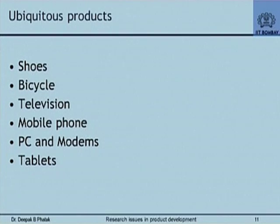Let me now talk about products that you and I are familiar with — ubiquitous products. Look at the list I have here: shoes. How many of you are familiar with the research issues in shoes? How many of you have considered that a mundane thing like a shoe could actually have a research issue?